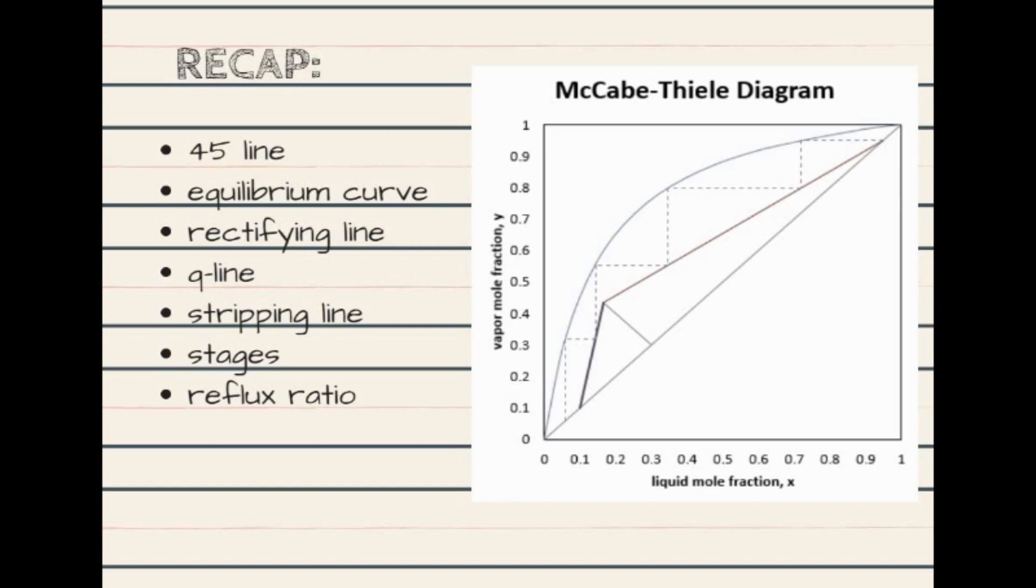First, we have the 45 line. We also have the equilibrium curve, which is usually obtained from the given vapor-liquid equilibrium data. Next is the rectifying line, which is the top section of the column, and the stripping line, the bottom section.